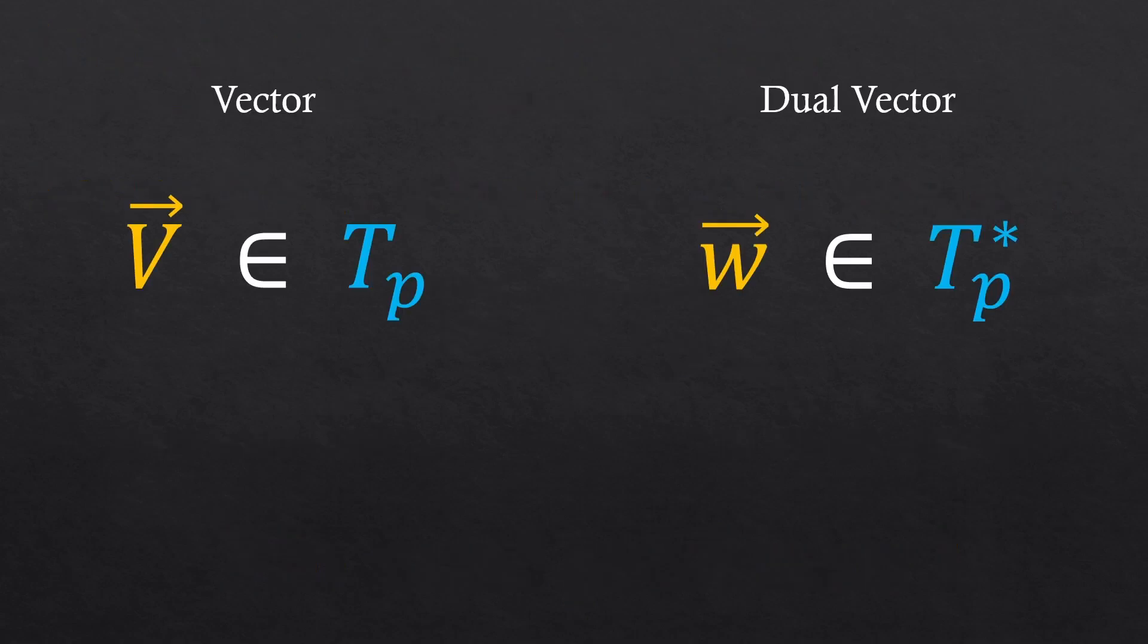So there are vectors and dual vectors. This one is the vector that we all know, and is part of a vector space, T sub P. And this one is a dual vector, which is part of a dual vector space. T stands for tangent, and P stands for plane.